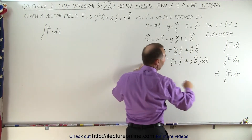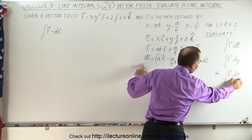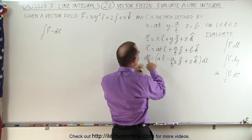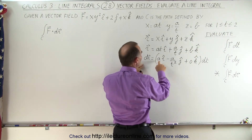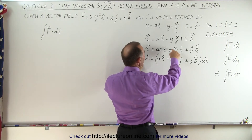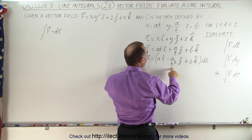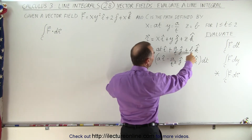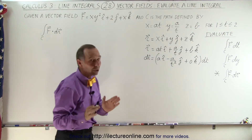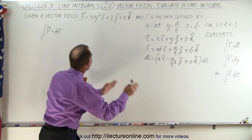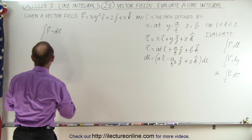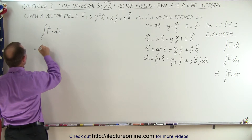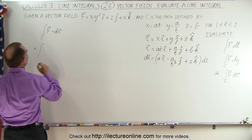We need to find the differential dr, so we take the derivative with respect to t. The i component becomes a, the j component becomes minus a over t squared, and the k component becomes 0 because b is a constant. Now we can go ahead and plug those into our integral.